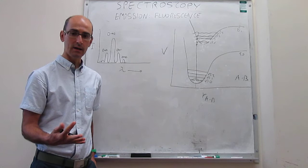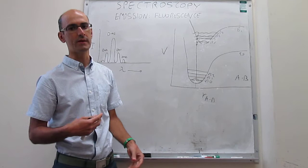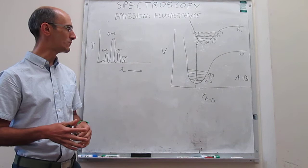In emission spectroscopy, what fluorescence is, essentially, is one of the ways that the system has to return from the excited electronic state to the ground electronic state. That is one of the ways for molecules to relax the electronic excitation.